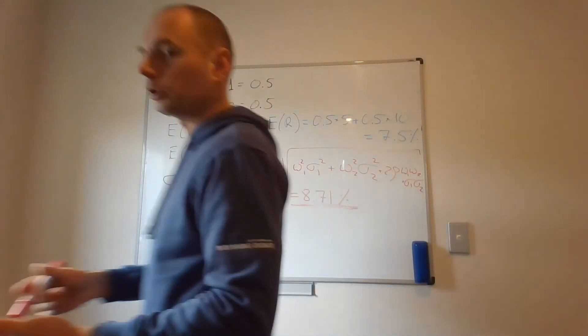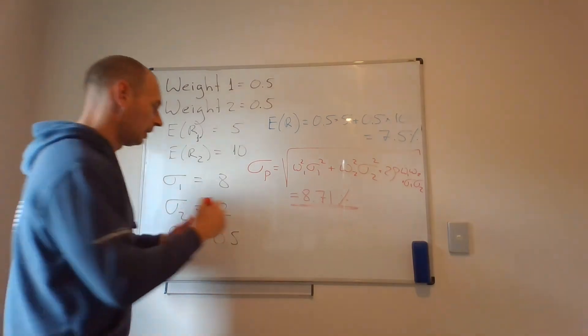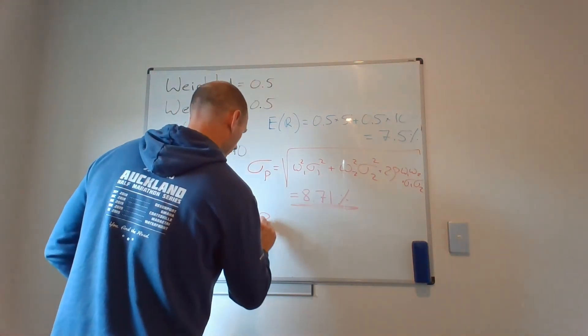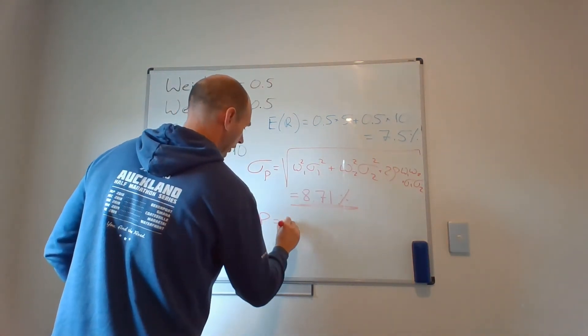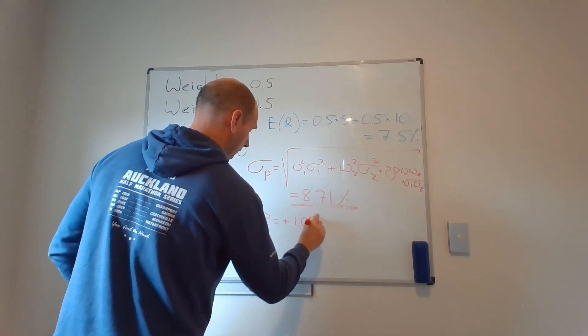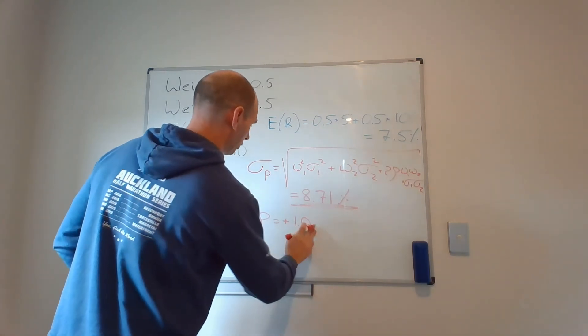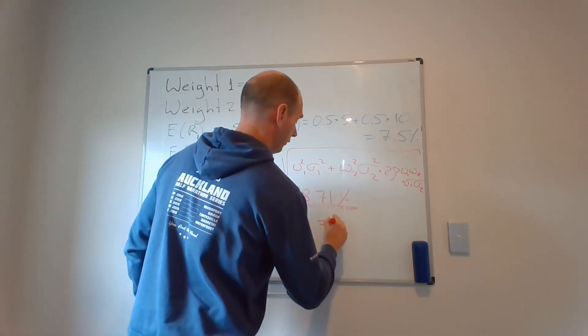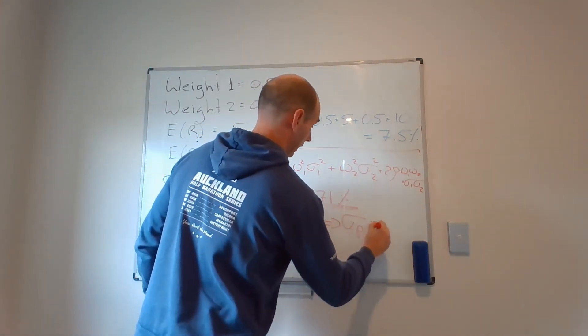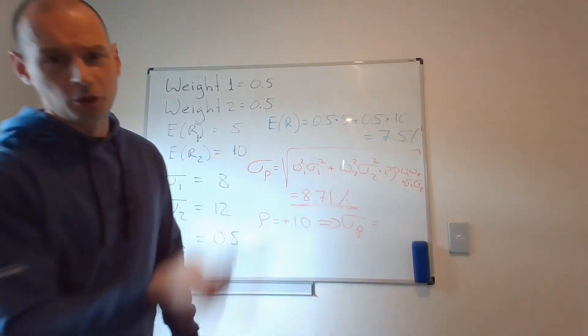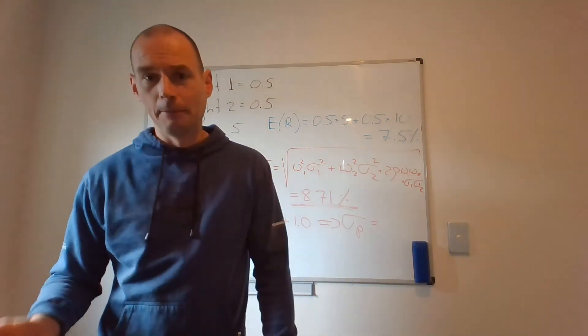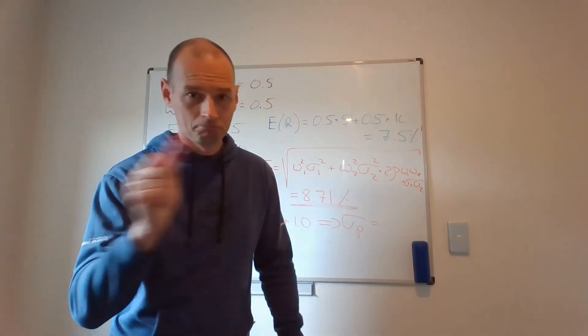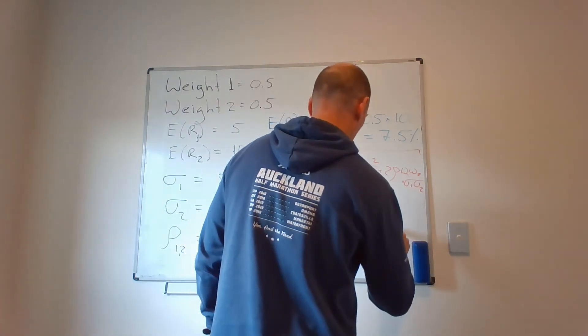So what happens in the worst-case scenario? In the worst-case scenario, when my correlation coefficient is plus 1. My standard deviation of this portfolio. And you can take my word for it, or you can preload this formula in Excel and check it yourselves. Trust me on this one. The number will be equal to 10.